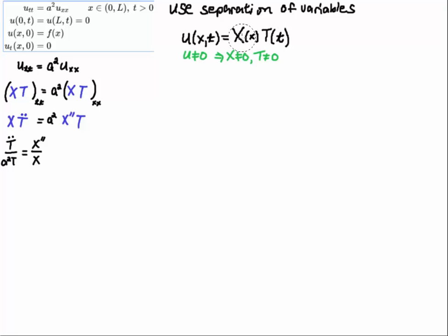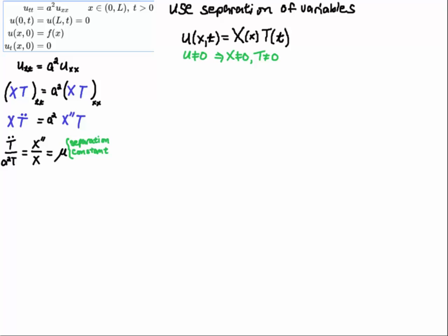I'm making the assumption that u is not zero, which implies by the factor theorem that capital X and capital T can't be zero. So I divide by them. Notice I have change with respect to t equal to change with respect to x — a function solely of t equal to a function solely of x. That has to be a constant, which we call the separation constant.